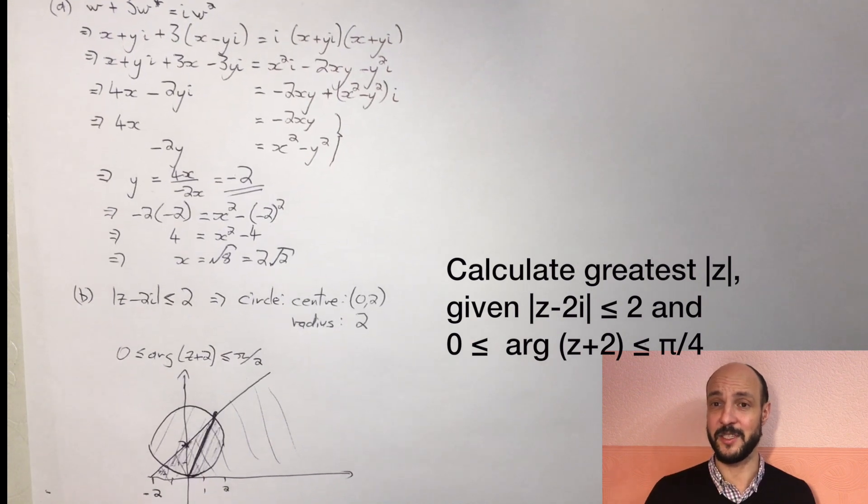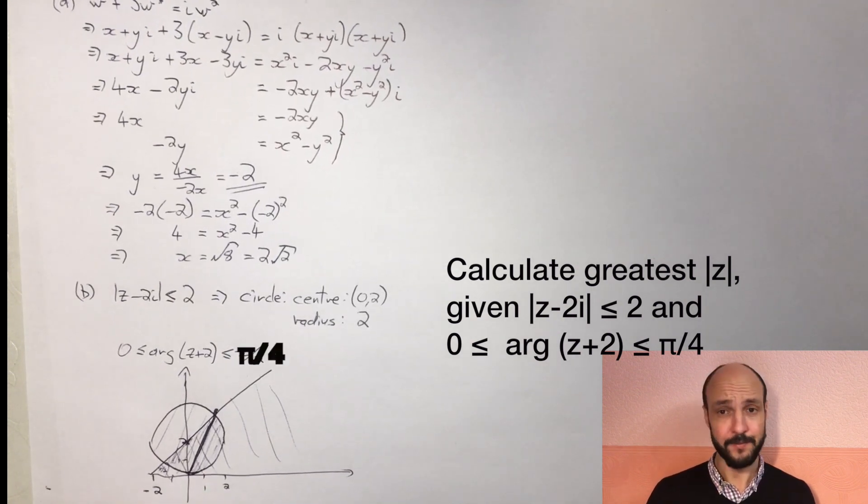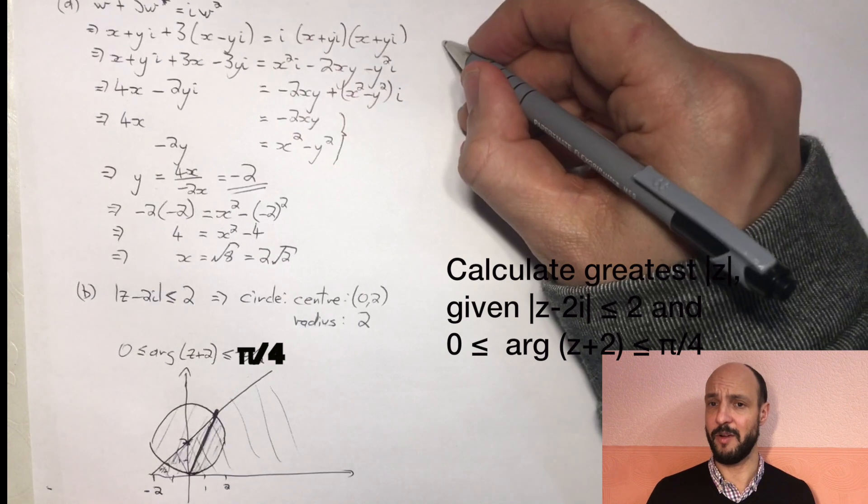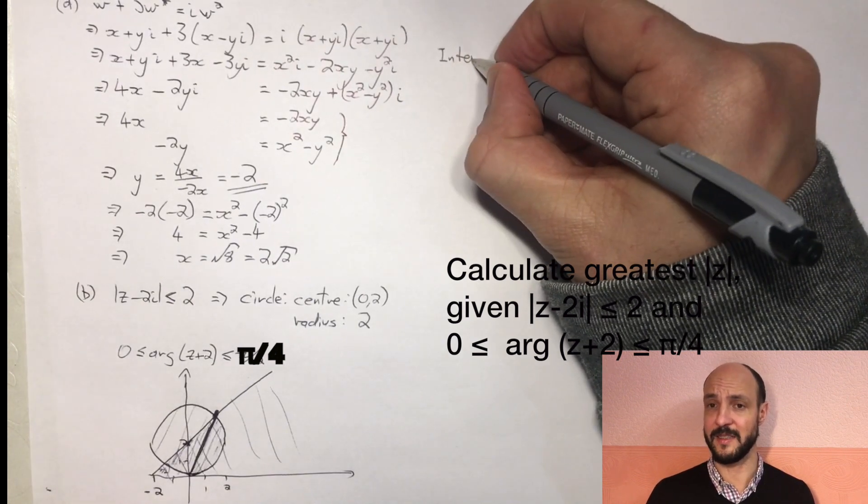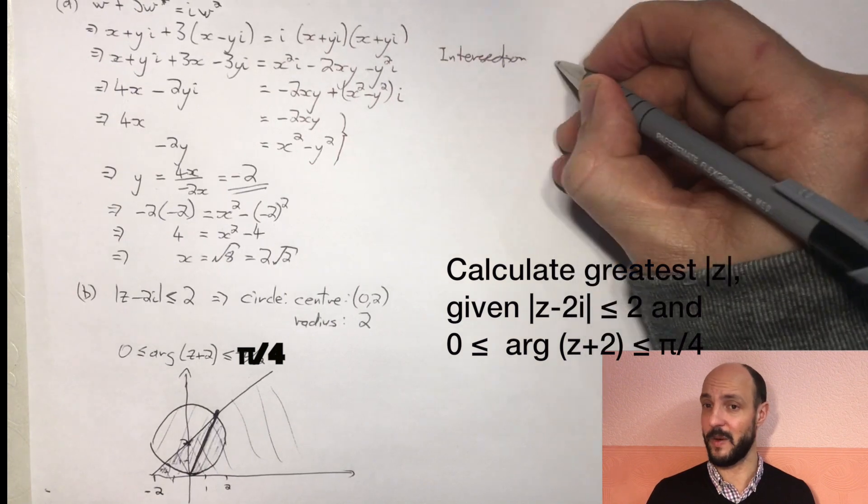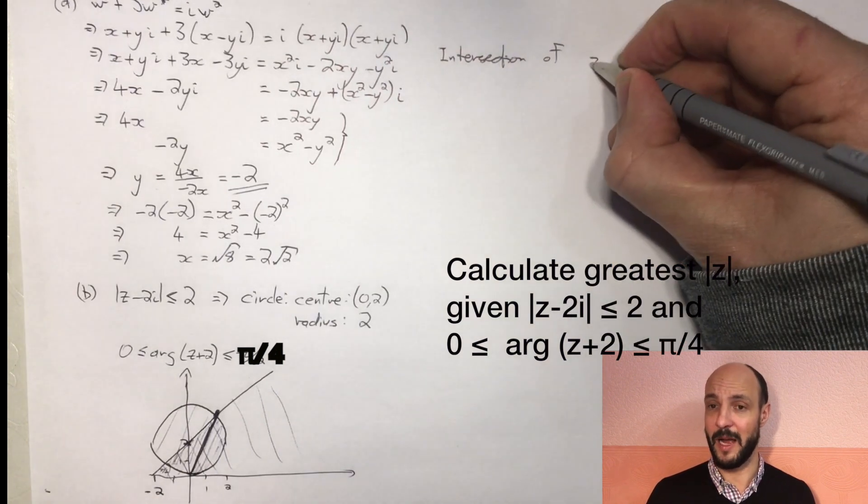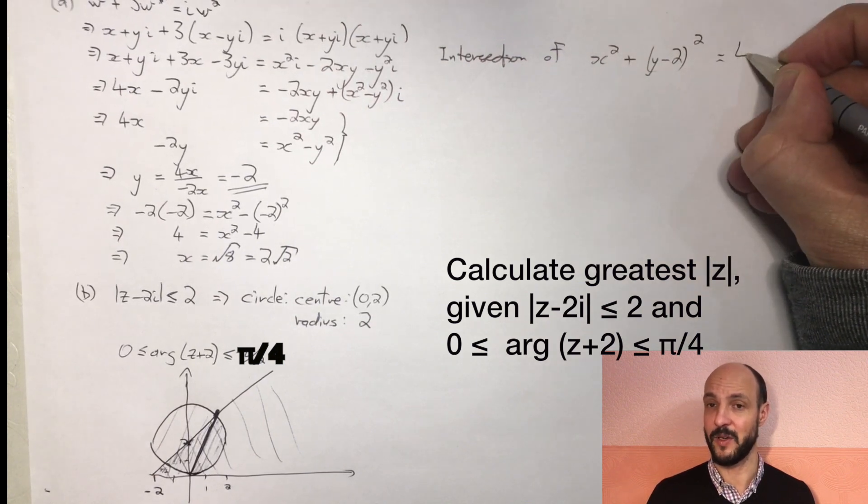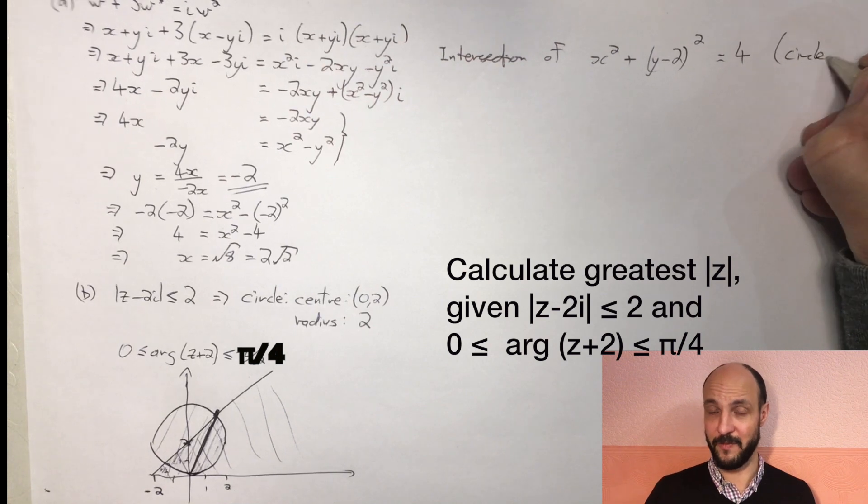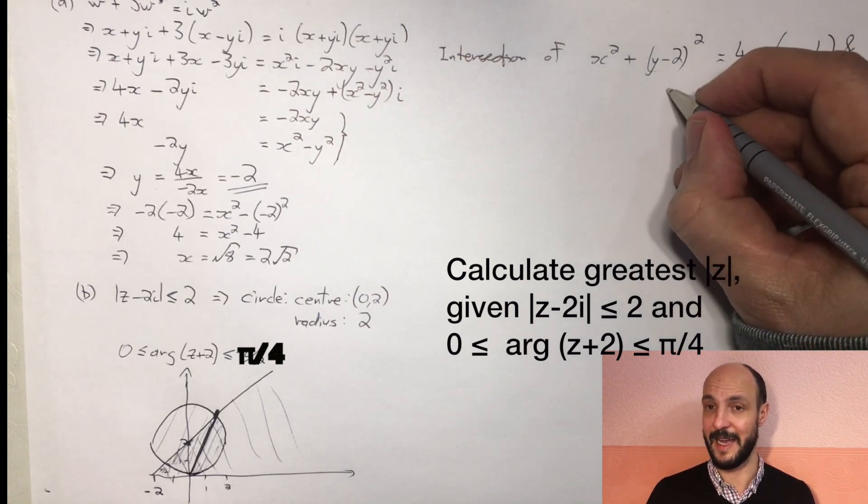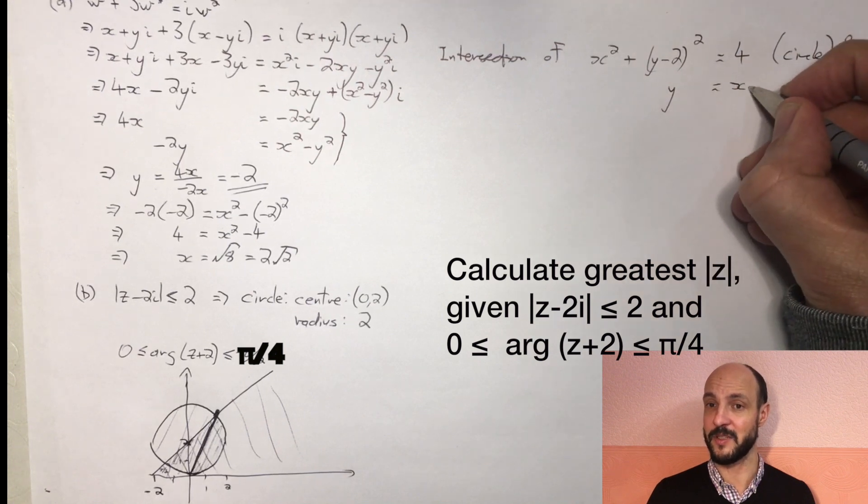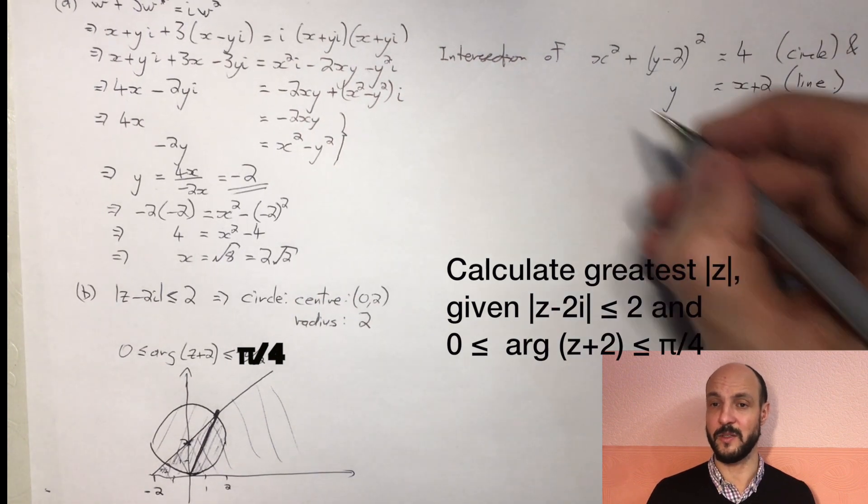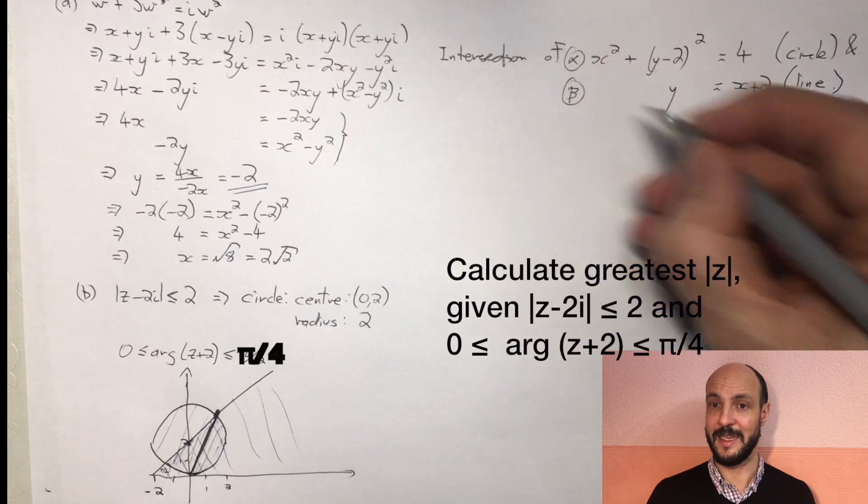So we simply need to solve the two equations. If we've got a circle with center 0, 2 and radius 2, the equation of a circle tells us that that's x minus 0 squared, or x², plus y minus 2 squared equals 2² equals 4. So x² plus (y minus 2)² equals 4. And the line, on the other hand, it's going up at 45 degrees so y goes up proportional to x, and it's going to cut the y axis at plus 2, so it's going to be y equals x plus 2.